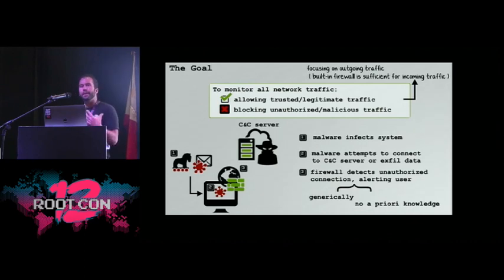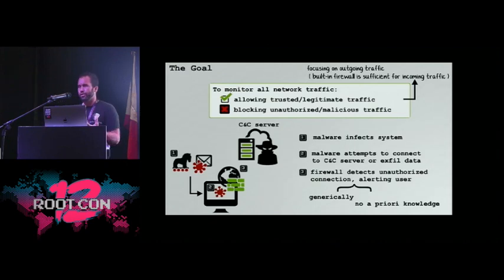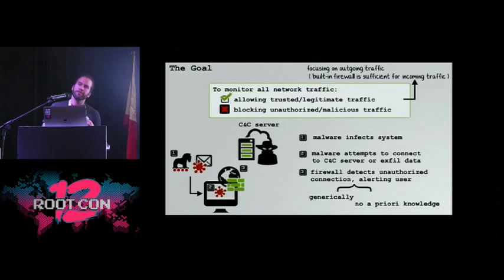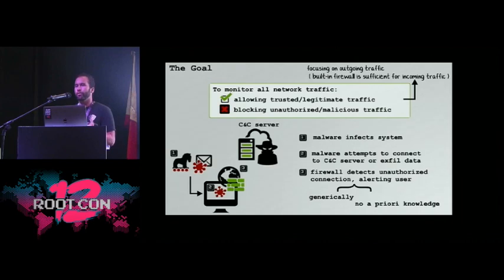Armed with this capability to monitor all traffic, we should be able to generically detect most infections. Imagine an attacker has somehow gained code execution on your Mac system — perhaps they even have a zero-day for the browser — and they've persistently installed something. When that backdoor implant wakes up and tries to connect to its command and control server, or exfiltrate data, a firewall monitoring all traffic will generically detect that this is new, untrusted traffic and alert you.